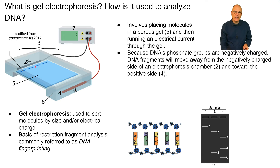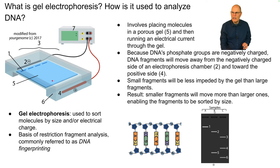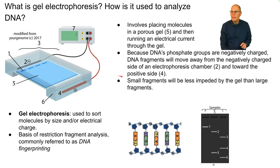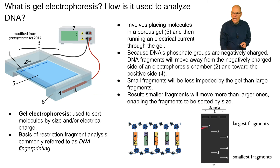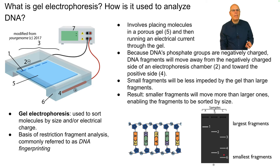Because DNA's phosphate groups are negatively charged, DNA fragments move away from the negatively charged side of the electrophoresis chamber. The small fragments are impeded by the gel less than large fragments, so over time smaller fragments move farther, enabling sorting by size. By the end of the process, you'd have DNA separated into bands — for example, one large fragment, two fragments, or DNA cut into three fragments by restriction enzymes.